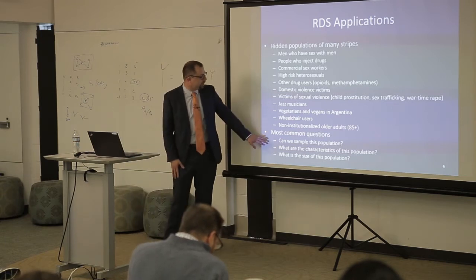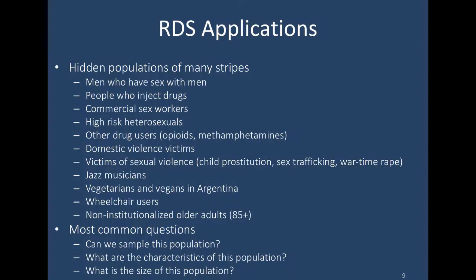The most common questions associated with respondent-driven sampling are: can we just collect data on this population at all? A lot of the early work on RDS really just focused on whether it yields a large sample quickly, and generally it found yes — it does yield a large sample and tends to be a little bit more quick than convenience samples. The second most important question is what are the characteristics of this population, with most work focusing on HIV prevalence, syphilis prevalence, or other health statistics. The last question is what is the size of the population overall.